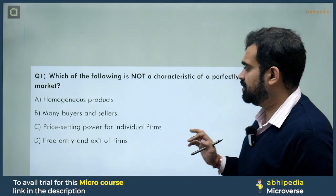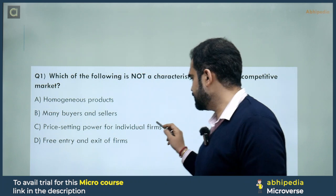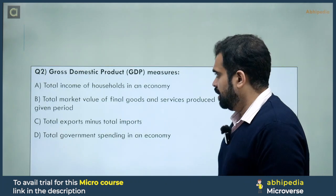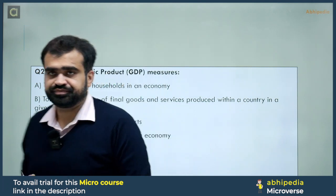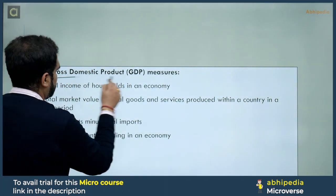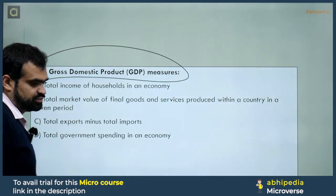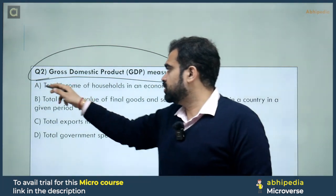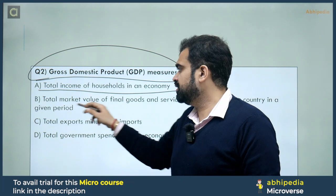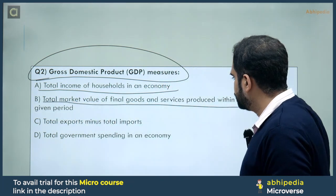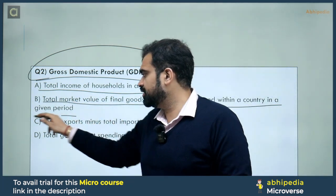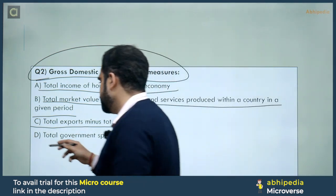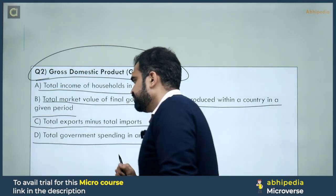The correct answer for question one was option C. Next question: Gross Domestic Product — GDP measures what? Options: A) Total income of households in an economy, B) Total market value of final goods and services produced within a country in a given period, C) Total exports minus total imports, D) Total government spending in an economy.